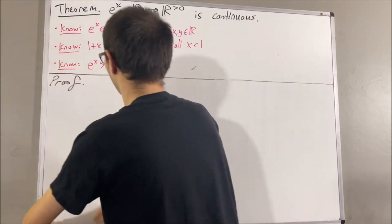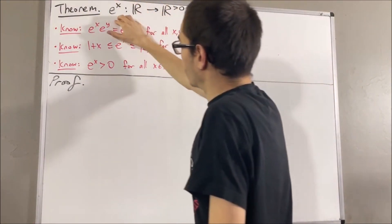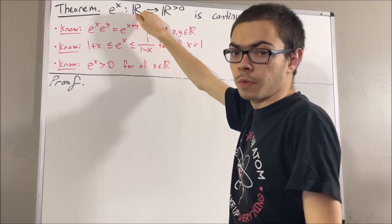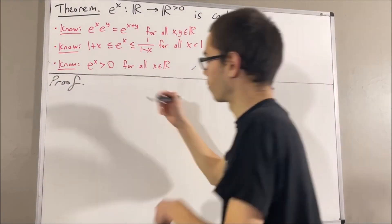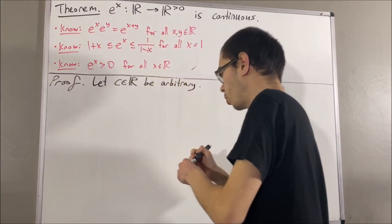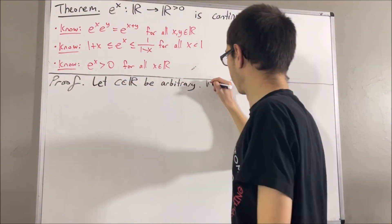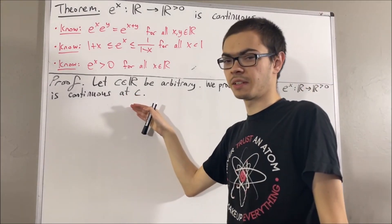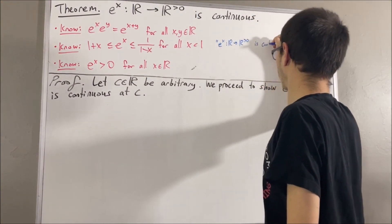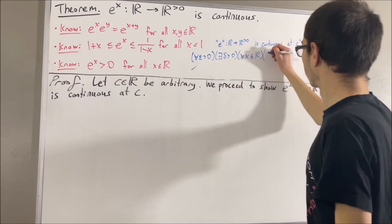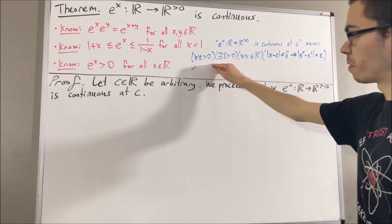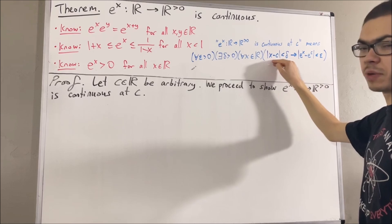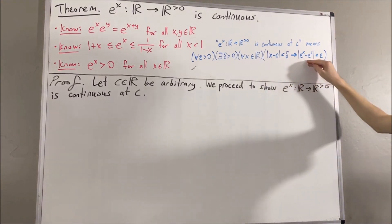Okay, so now let's get into proving this theorem. To say that this function is continuous means that this function is continuous at every real number. So, to start the proof, let's give ourselves an arbitrary real number c. From here, the whole goal is to prove that e to the x is continuous at c. So, what does it mean for e to the x to be continuous at c? It means for every epsilon greater than 0, there exists a delta greater than 0, such that for all real numbers x, if the absolute value of x minus c is less than delta, then the absolute value of e to the x minus e to the c is less than epsilon.